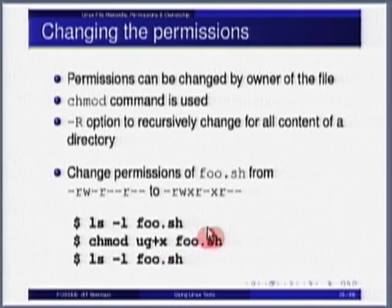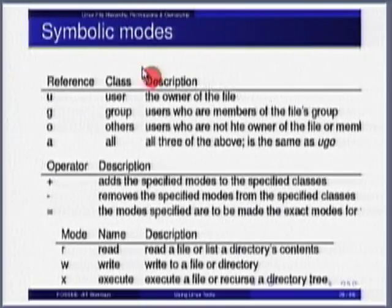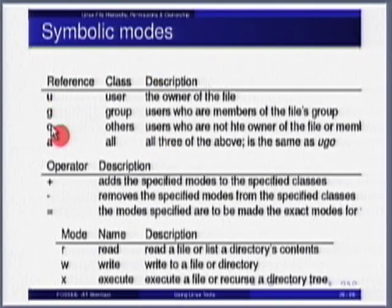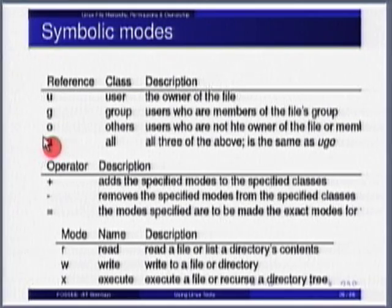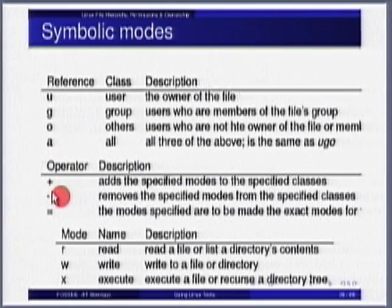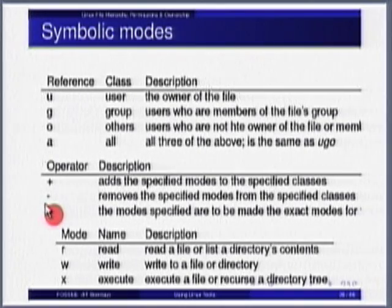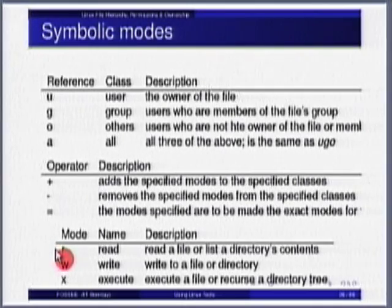U for user, G for group, O for all others outside the group, A for all — in one go everybody gets the permission. It includes user, plus for adding the specified permission, minus for removing, equals to means you specify what mode it should be in. Then you specify whether this addition or denial is for read, write, or execute.